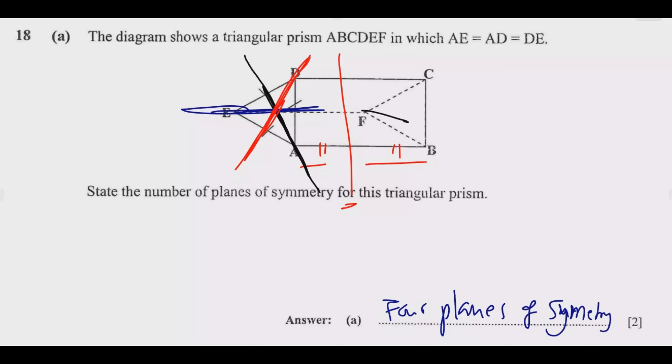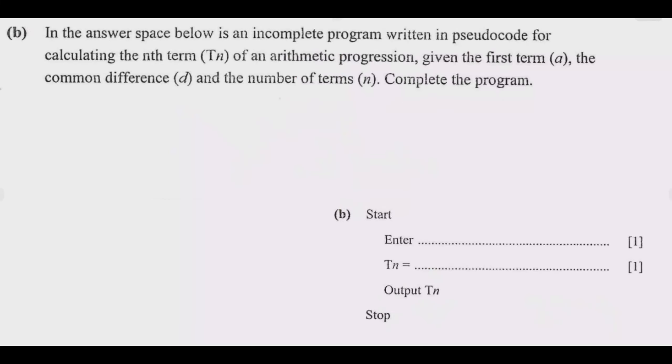Once you do that you're good to go, you get the two marks. We go to question b. In the answer space below is an incomplete program written in pseudocode for calculating the nth term of an arithmetic progression.